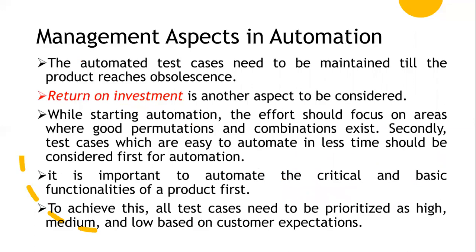From a management perspective, when starting automation we need to concentrate on areas with high automation potential. Test cases should be automated in less time and in an easy manner to get return on investment. We also need to automate the basic functionality of the product, and test cases should be prioritized as high priority, medium priority, and low priority based on customer expectations. Automation should focus on high priority first, then come to low priority requirements. That is all about the scope of automation.